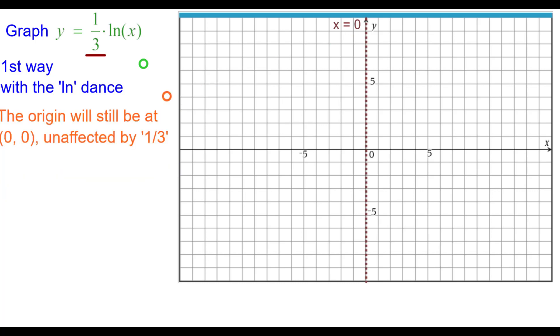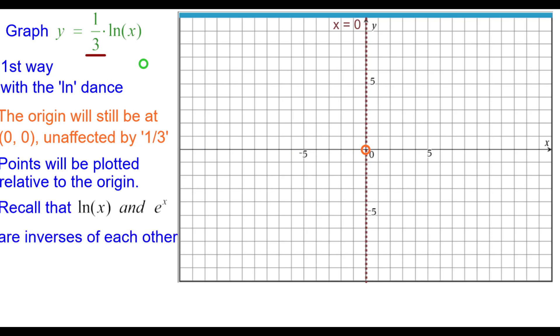The origin will still be at zero, zero, unaffected by that factor of one-third, so we'll plot that because all points will be plotted relative to the origin. Please recall that the natural log of x and e to the x are inverses of each other. That is, we interchange the x and y coordinates. And these are the powers of e that we're supposed to know, so we need to know those and then also be able to interchange them.